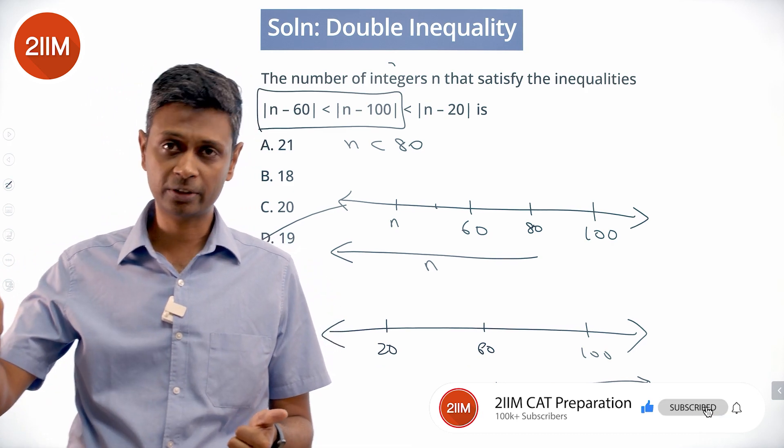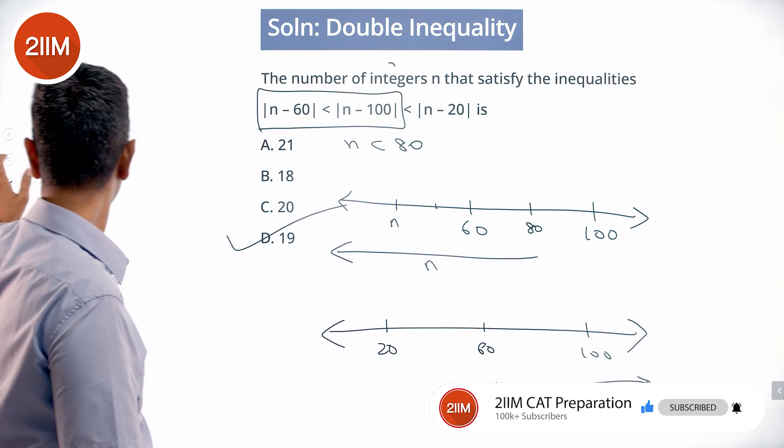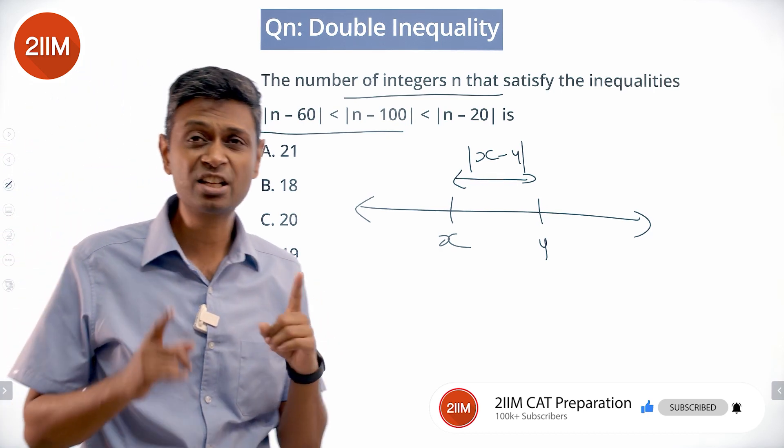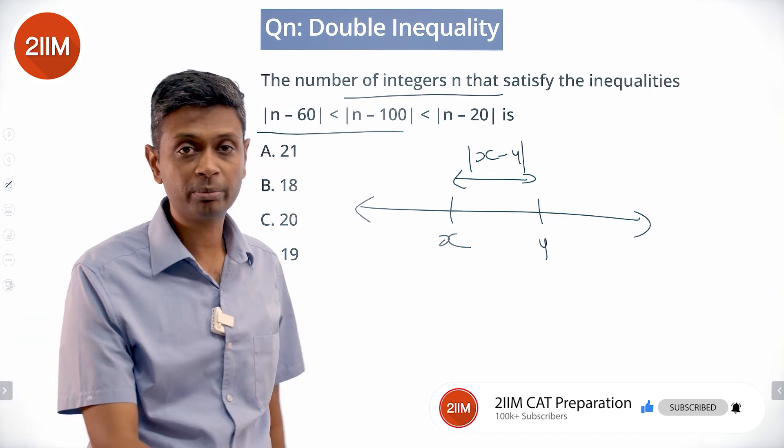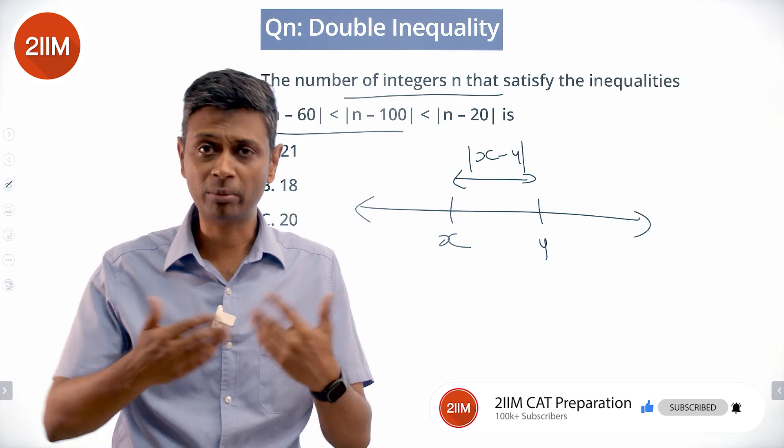The key point here is if you have two points x and y on the number line, the distance between the two points is |x - y|, which is nothing but |y - x|. Both are same.